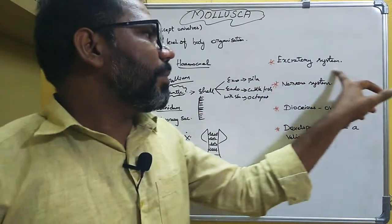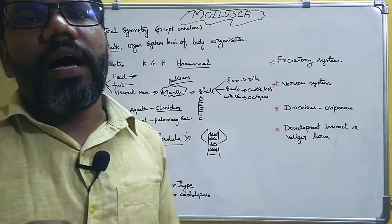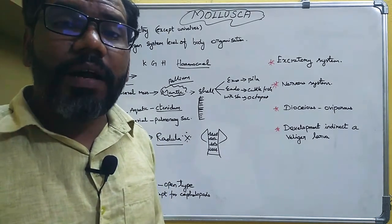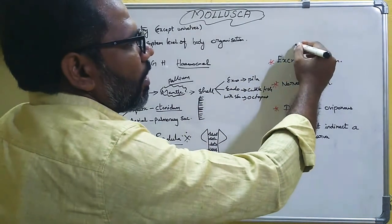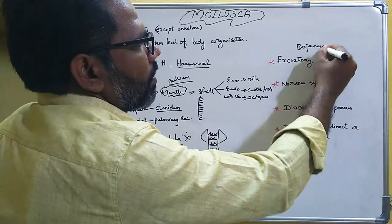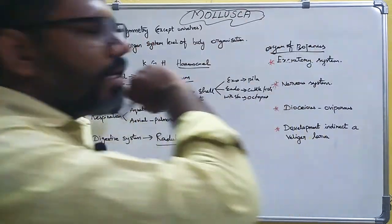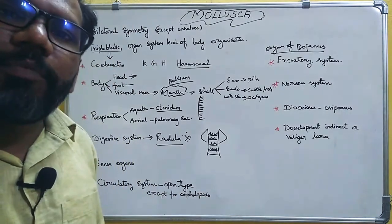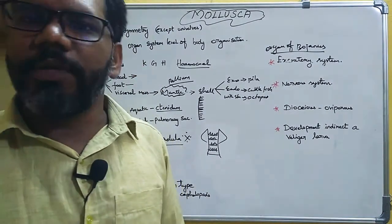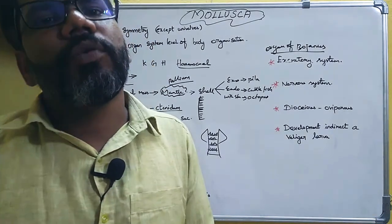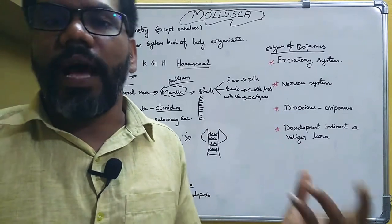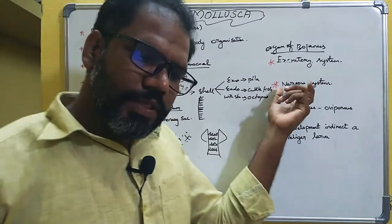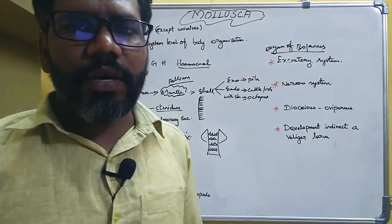The excretory system consists of a pair of kidneys called nephridia, also known as the organ of Bojanus. Mollusca can be aminotelic (aquatic) or ureotelic, and terrestrial forms are uricotelic. Excretion is carried out by the organ of Bojanus.